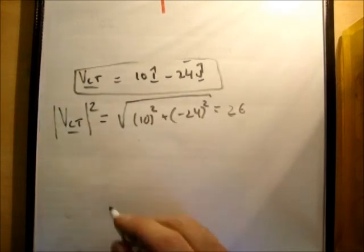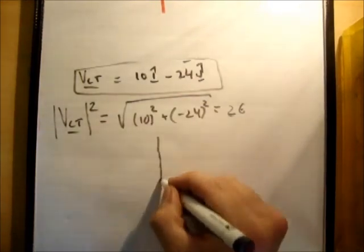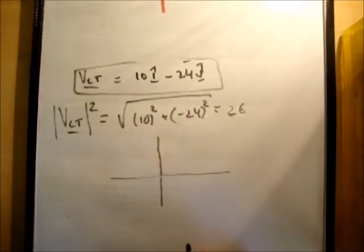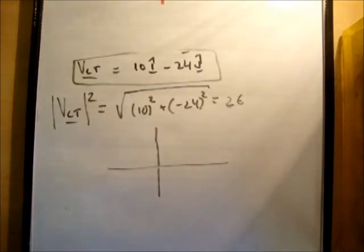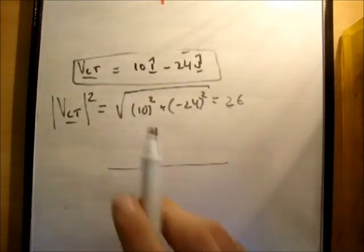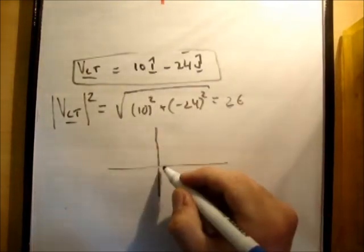And the direction. So that's another xy or Cartesian plane. So this vector is in the positive x and negative y, so it's down here.